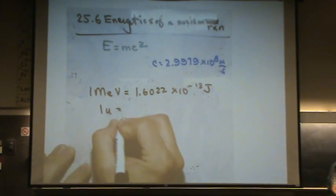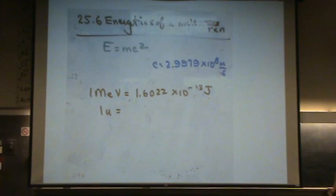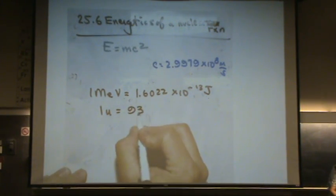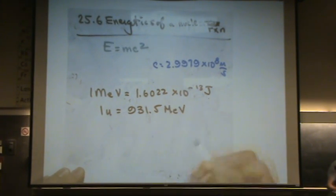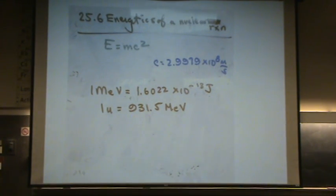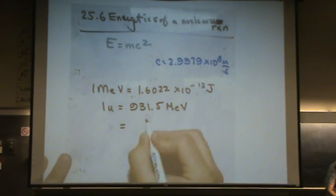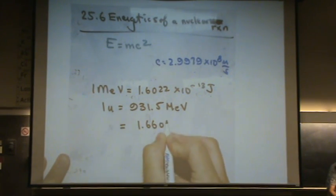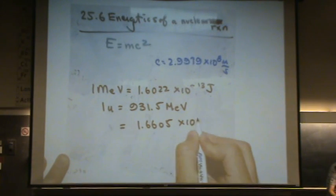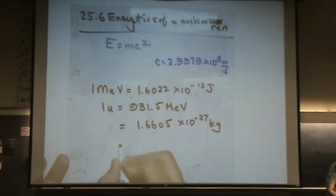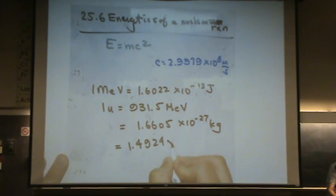One U, what's a U? It's an atomic mass unit. Sometimes you write an AMU, or it can be written U, it's an atomic mass unit. That's 931.5 mega electron volts. So an electron volt is another common unit that people use. This is equal to 1.6605 times 10 to the minus 27 kilograms. And this is equal to 1.4924 times 10 to the minus 10 joules.